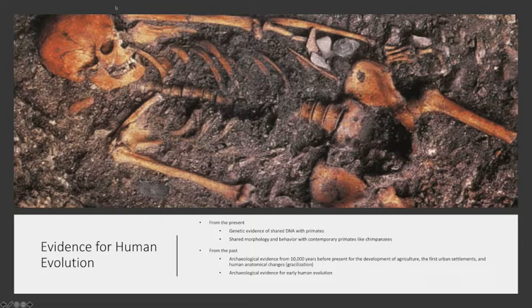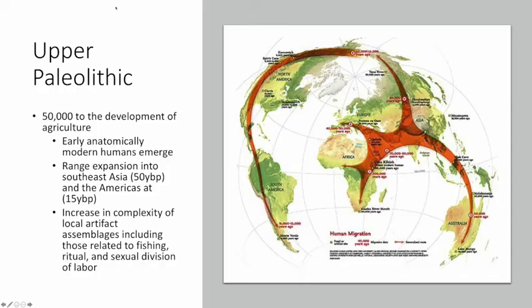We're continuing to look at the archaeological evidence for early human evolution, but we're going to go further back in time. If we go back before the development of agriculture, there is a period known as the Upper Paleolithic, or the Upper Stone Age — from about the development of agriculture to about 50,000 years ago. It is where we have clear evidence for what we would call anatomically modern humans in the archaeological record.